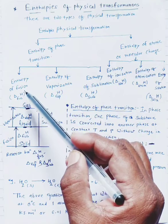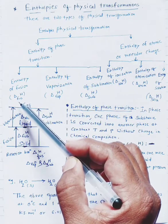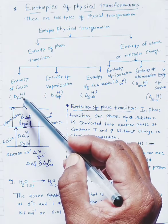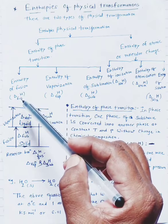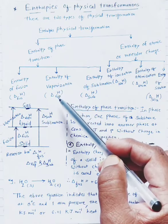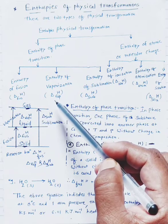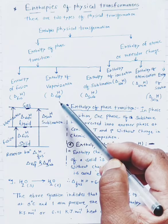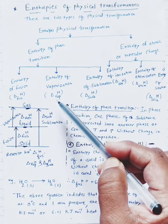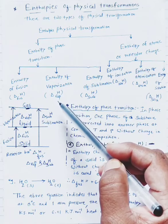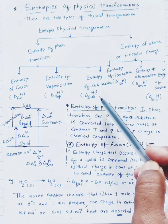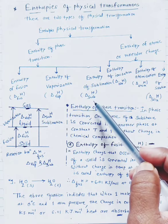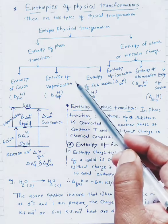The three classifications are: enthalpy of fusion, denoted by the symbol delta-fus H; enthalpy of vaporization, denoted by the symbol delta-vap H; and enthalpy of sublimation, denoted by the symbol delta-sub H.